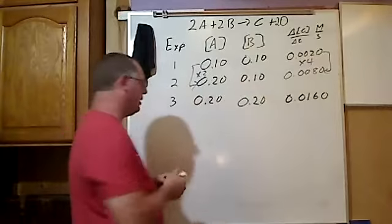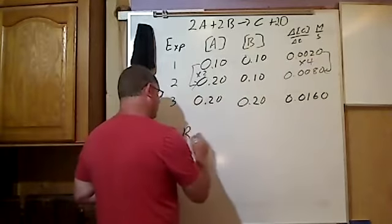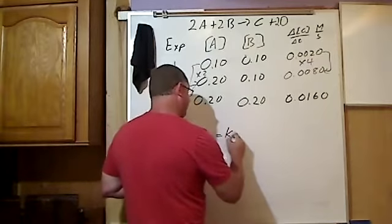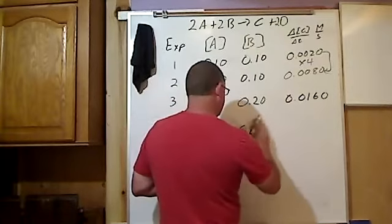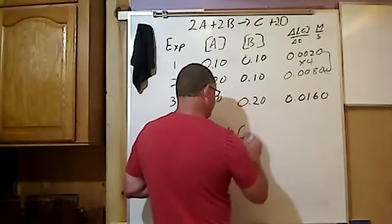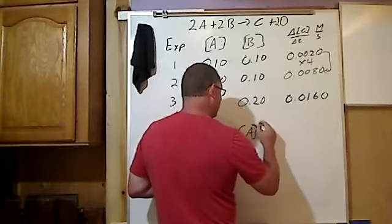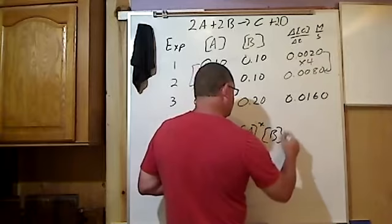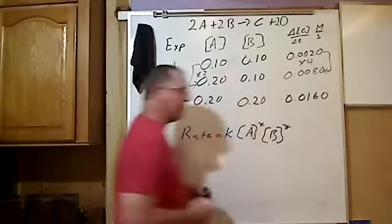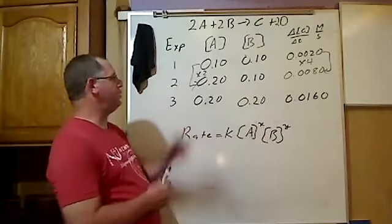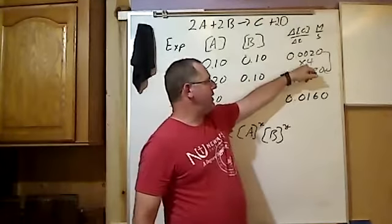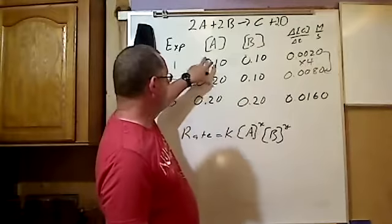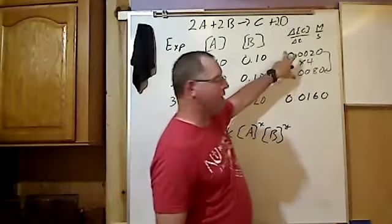Now if you recall, our rate law is equal to our rate constant k times our concentration of A to some power x, the concentration of B to some power y. In order to find x and y, that's what we're doing here. Now 2 to the x power is equal to 4. The change here to the x power is the change here.